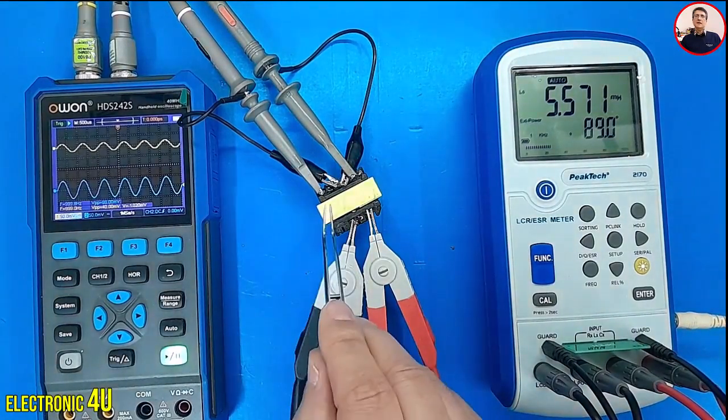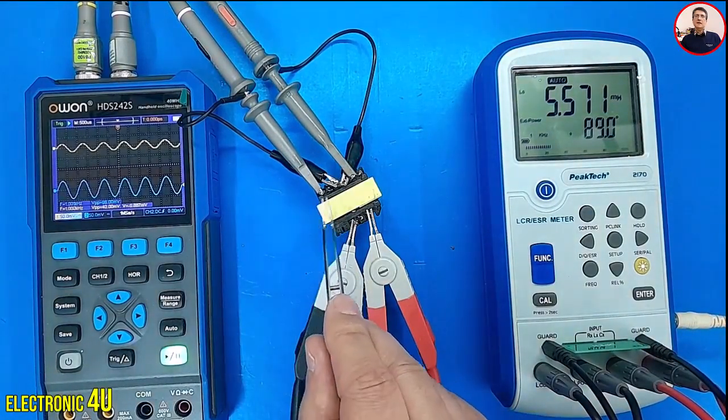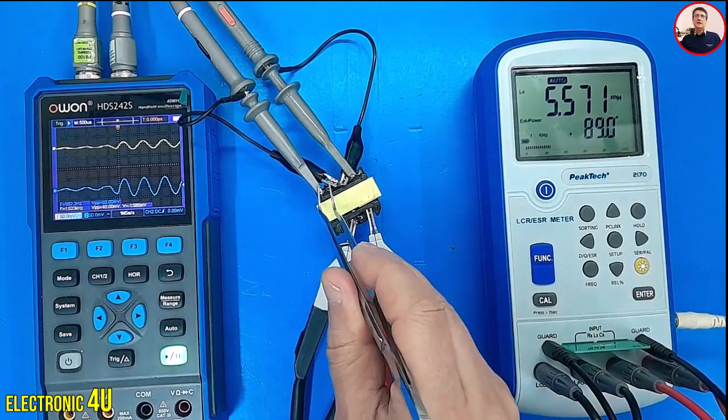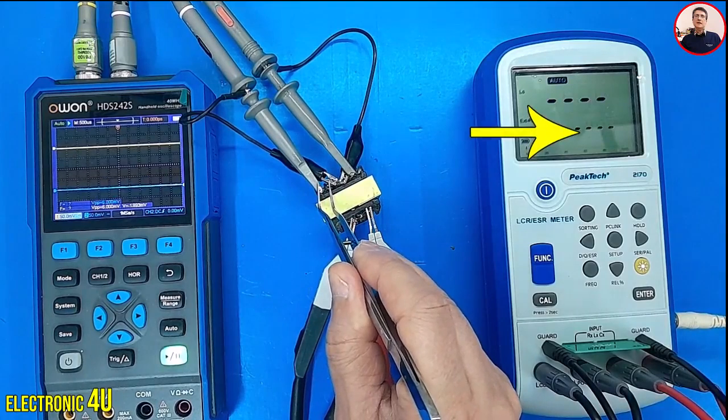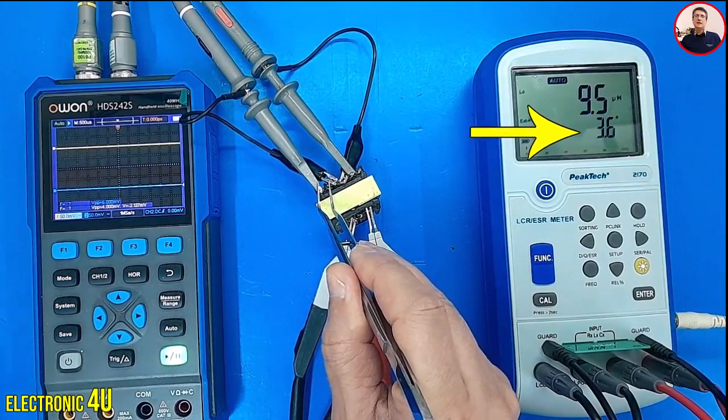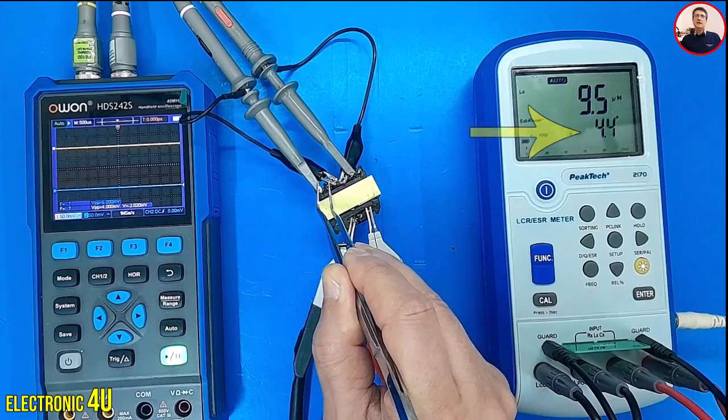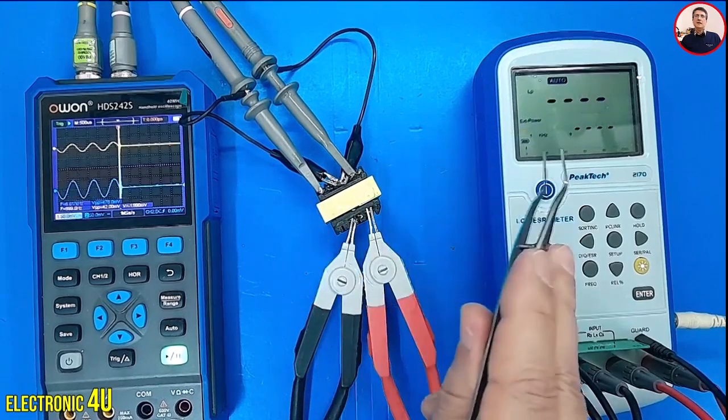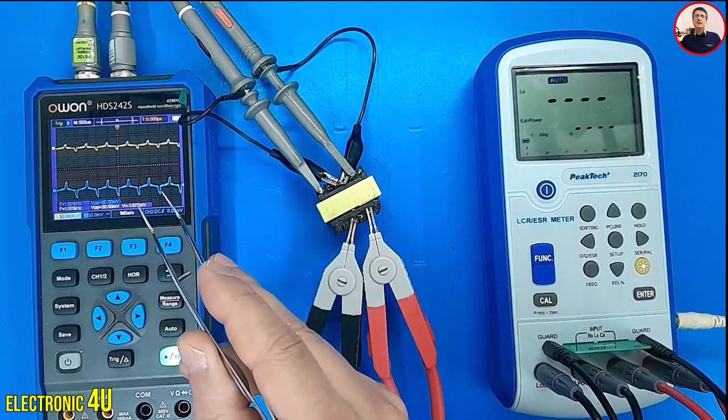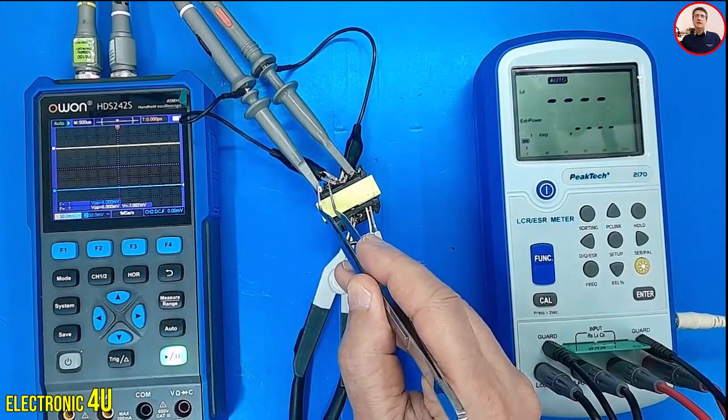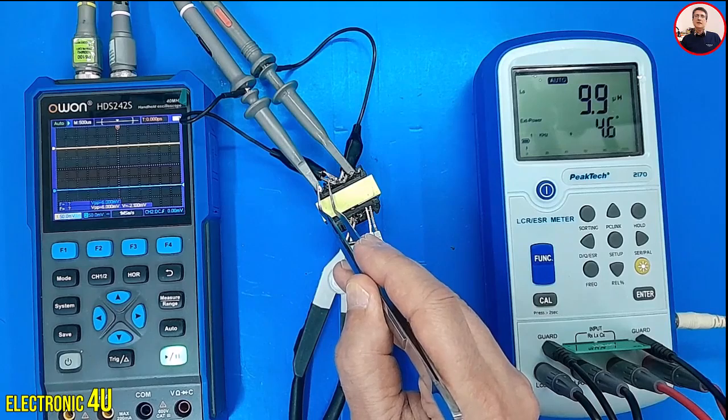Now, to test the transformer, I short one of the secondary windings. Pay attention to the phase angle and waveform on the oscilloscope. The phase angle decreases.